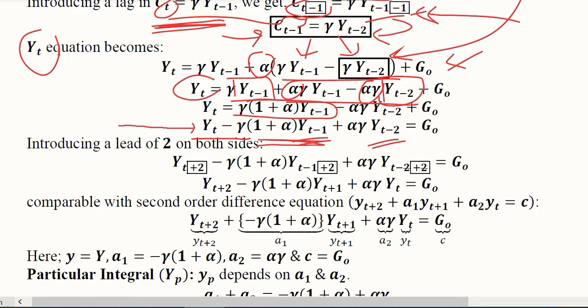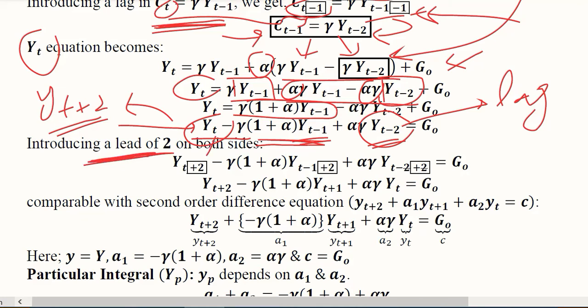If I look at it and compare it with the standard form of second order difference equation, it has a small difference. In that we started with a lead of 2, whereas it is starting with the current value YT and there is a lag of 2. So we can convert this to standard form by introducing a lead of 2 so that it becomes YT plus 2. We have added 2 in the subscript of all the terms.